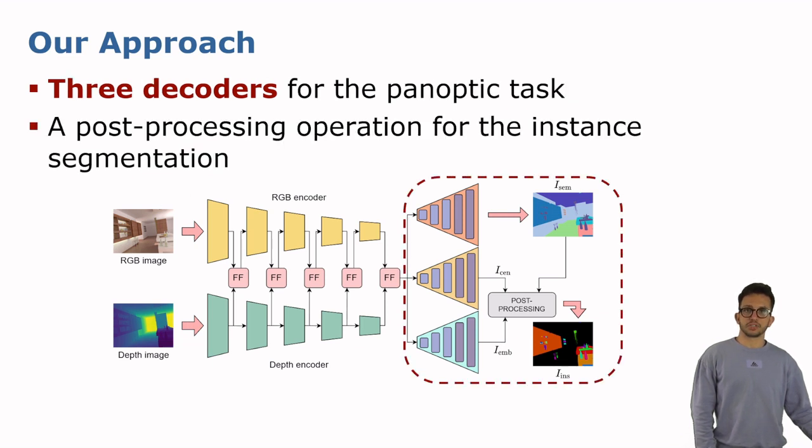We have three decoders for the panoptic task. Specifically, one decoder targets semantic segmentation, while the other two predict object centers and object embedding vectors. For the embeddings, we aim to have similar embedding vectors for pixels belonging to the same instance, and different embedding vectors for pixels belonging to different instances. Finally, center embeddings are post-processed with the help of the semantic segmentation for consistency between classes and objects in order to obtain the final instance masks.